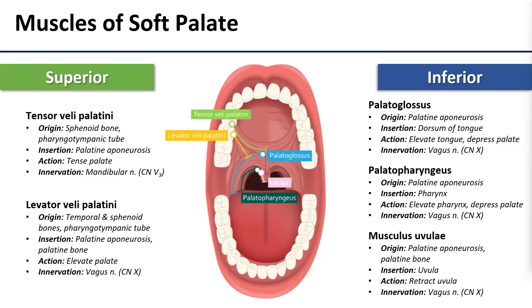I find it useful to separate the soft palate muscles by where they originate, because that is really going to dictate how they act on the soft palate — so whether they lift it or depress it. We're going to work superior to inferior, right to left.